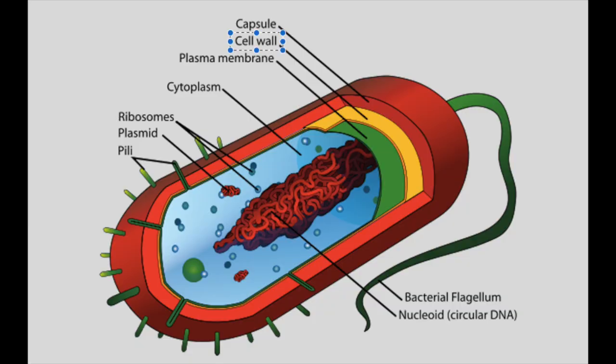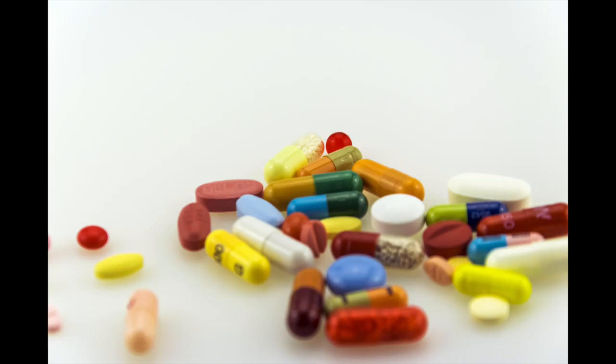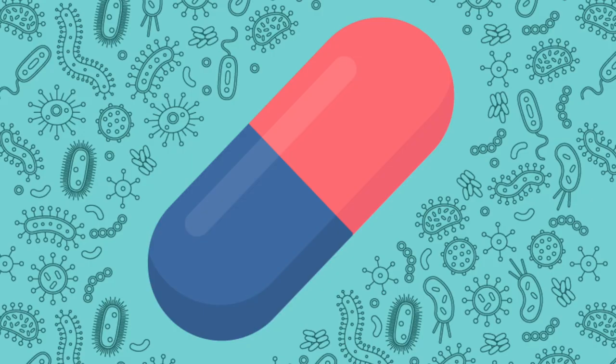Most commonly, antibiotics destroy the cell wall of a bacteria, prevent it from replicating, or destroy its energy supply. All are very effective, but bacteria can strike back. They're constantly replicating, which can cause natural mutations that make them resistant to a certain antibiotic.